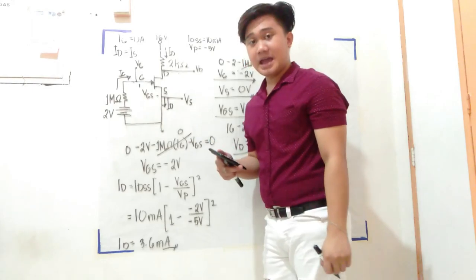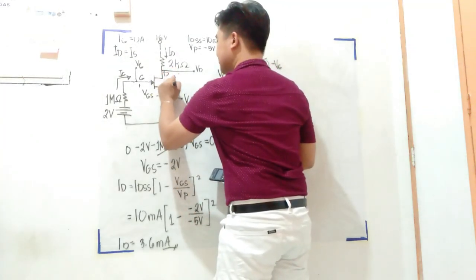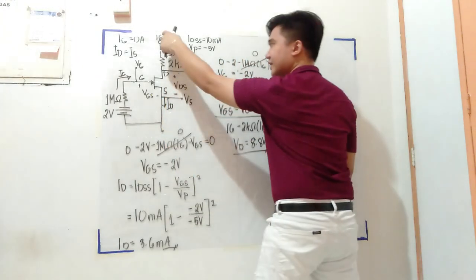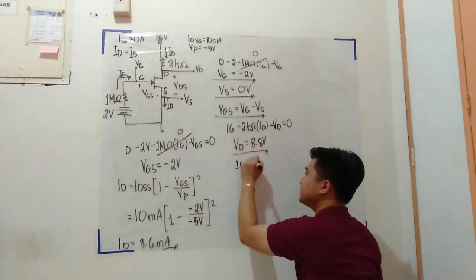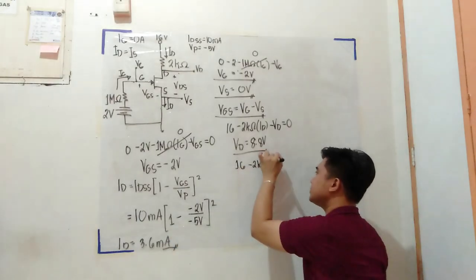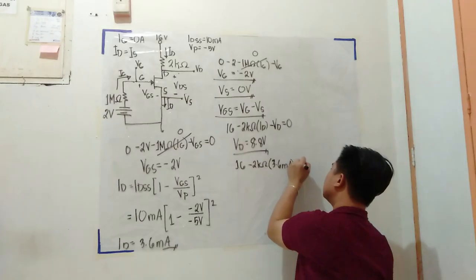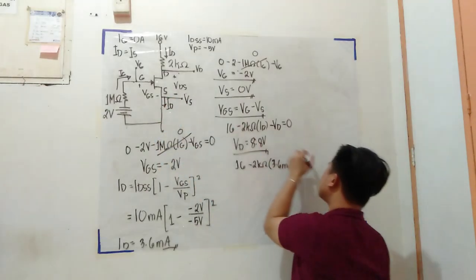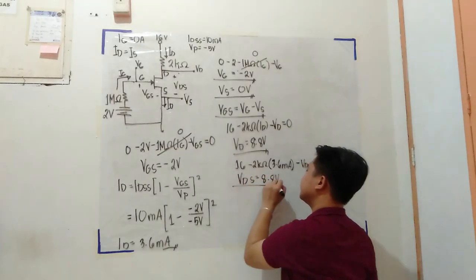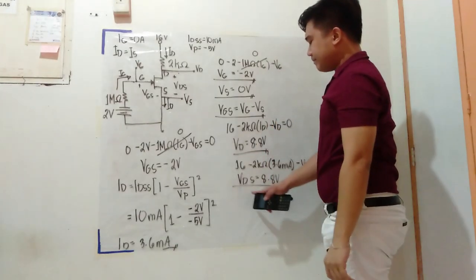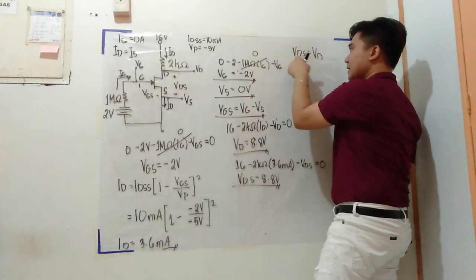And if BJT has VCE or collector to emitter voltage, we have drain to source voltage, and here I'll find VDS. So KVL going straight from source: that is 16 minus 2 kilo ohms times the value of ID which is 3.6 milliamps, then minus VDS, then straight to ground equals zero. So VDS equals 8.8 volts.